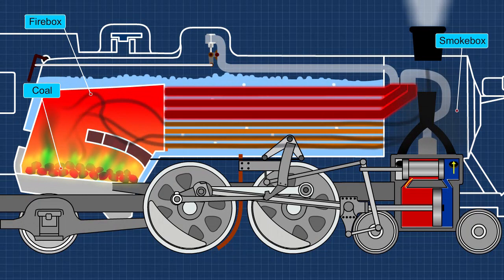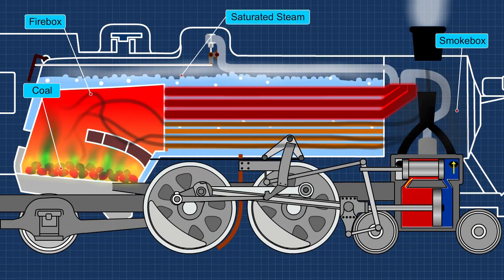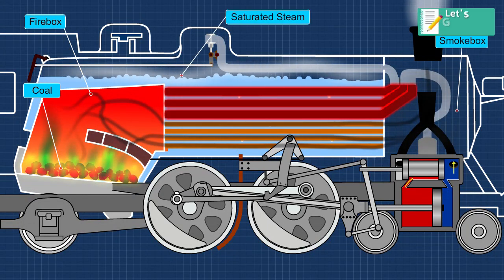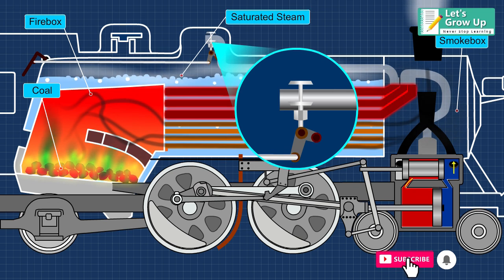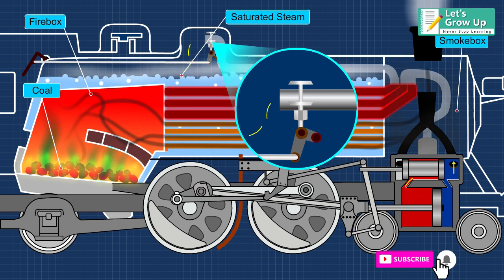As the water gets hotter, it transforms into saturated steam and is collected above the water. A regulator valve located in the dome is used to control the passage of the steam to the cylinders.